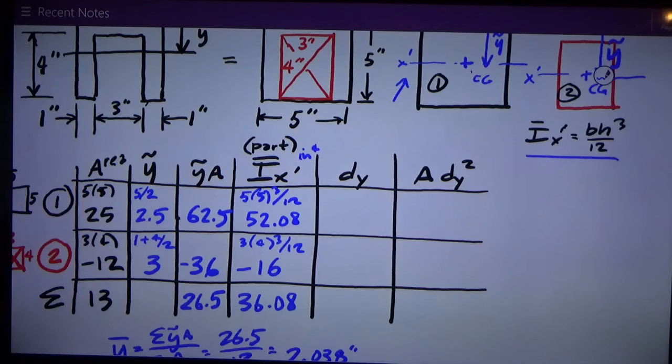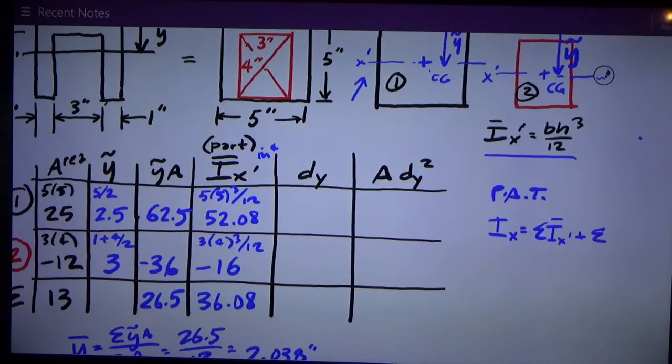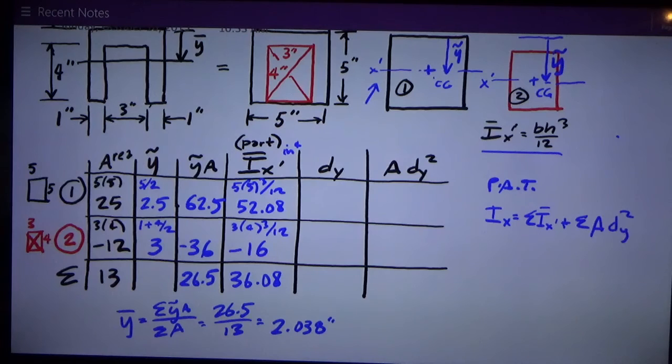My next column is the dy column. Remember this table is based on the parallel axis theorem which says that i x of any x axis, and for this it's a summation, sum of the centroidal moment of inertia i bar x primes plus the sum of the A d squared terms. In this case it's A dy squared because I'm dealing with the x axis. That's what this chart's based on.